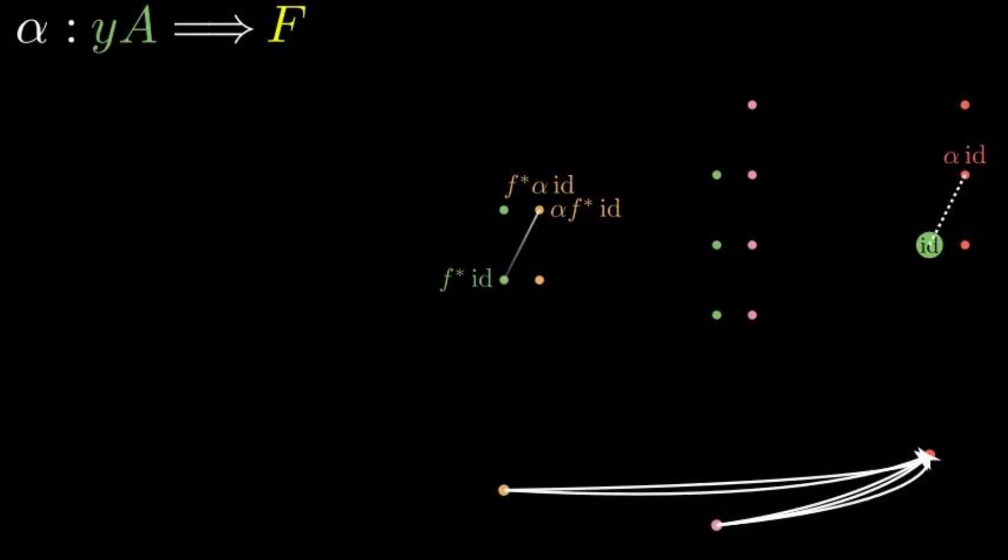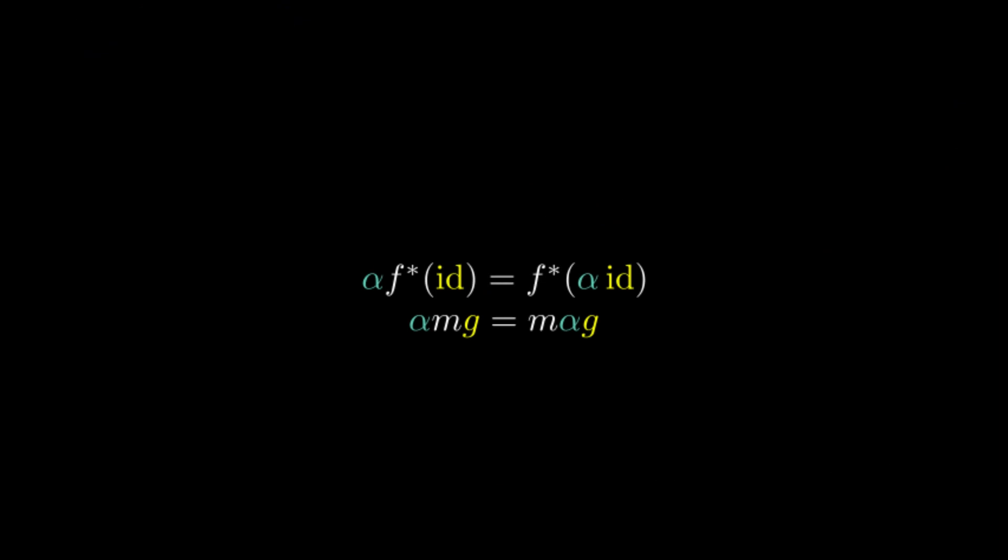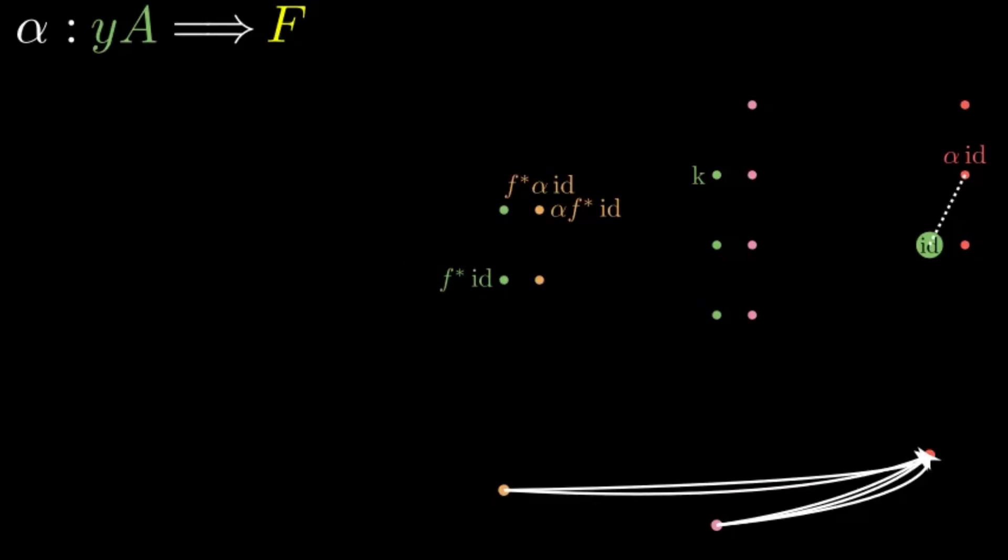Thus, knowing where the identity is sent provides a recipe for the image of any other element. Pull the image of identity along the arrow this element represents. Note that algebraically this looks just like the story with free modules. This is what the Yoneda Lemma is about.